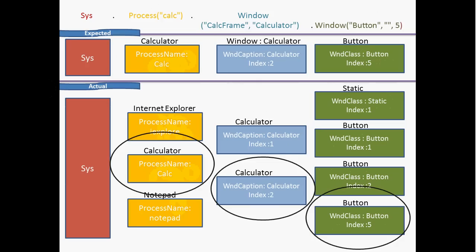Now let's understand where we are going to use this information. TestComplete's object model recommends only a few properties to identify an object, window, or process in an application. But sometimes these properties are not sufficient to uniquely identify an object.